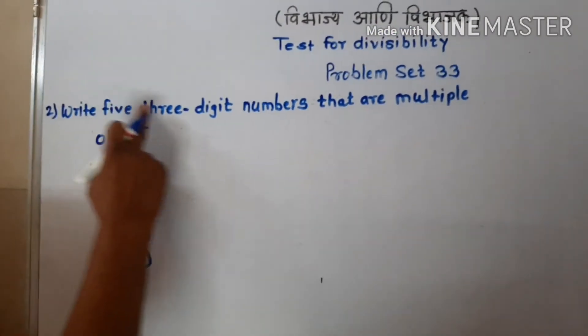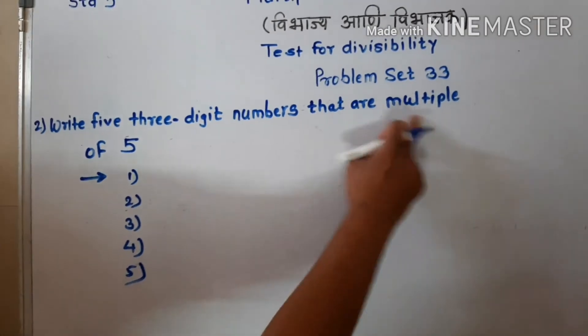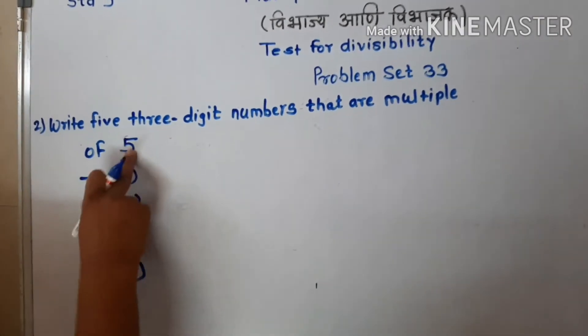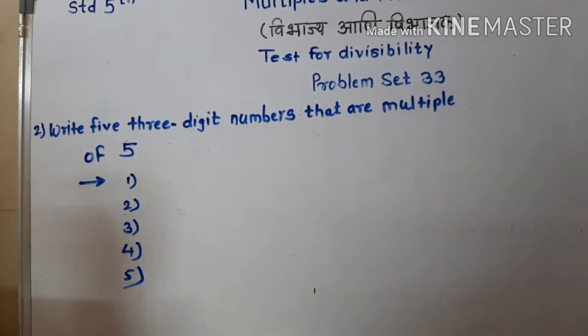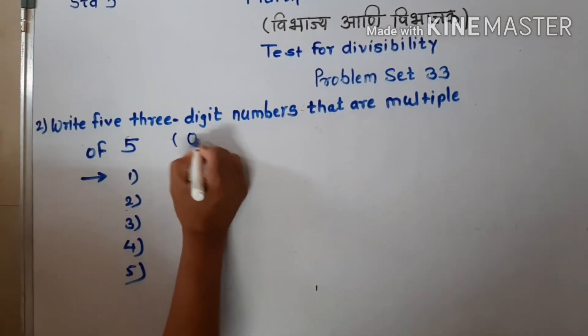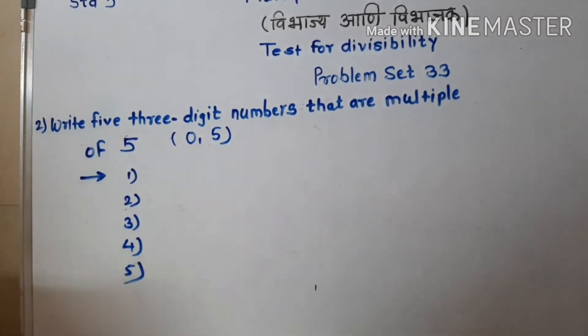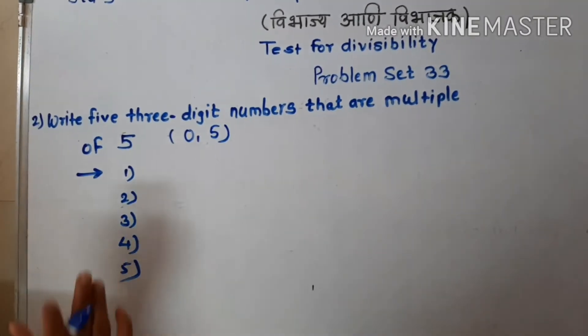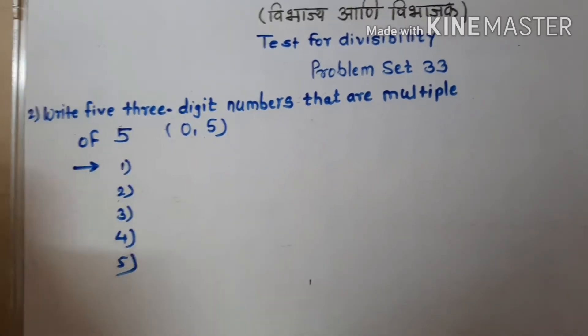Write 5 three-digit numbers that are multiples of 5. For multiples of 5, the unit place should have 0 or 5 — then the number is a multiple, i.e., divisible by 5.